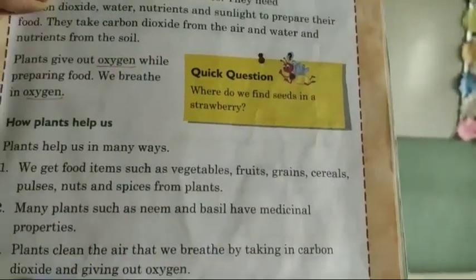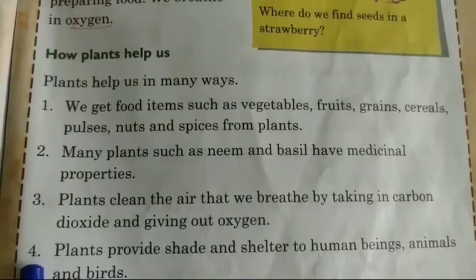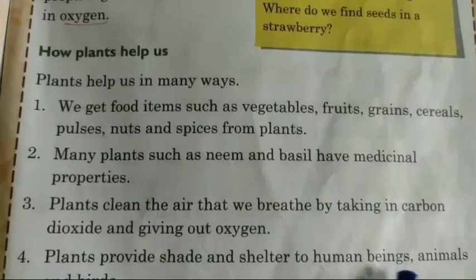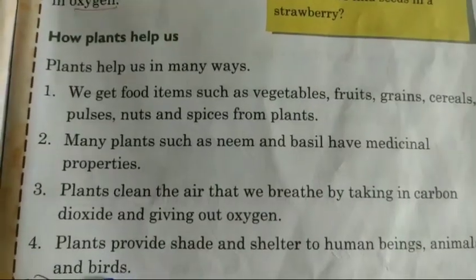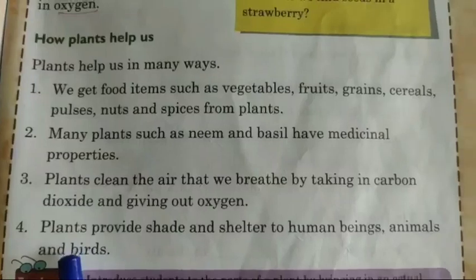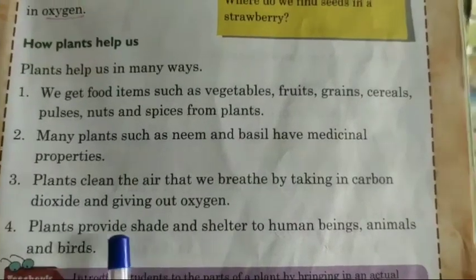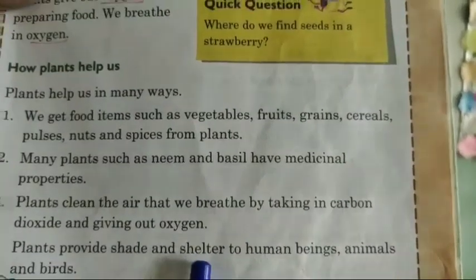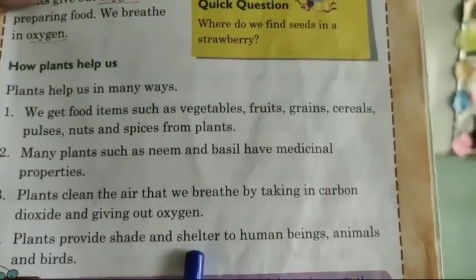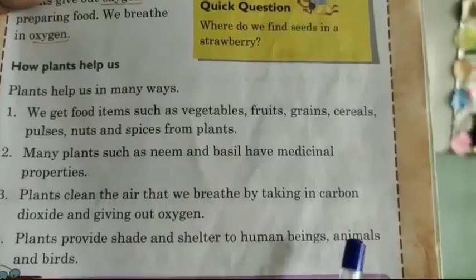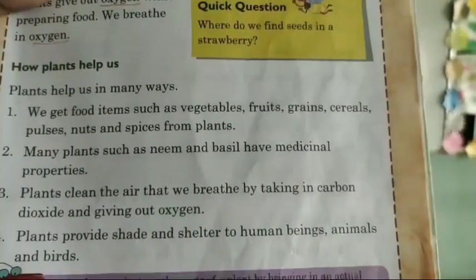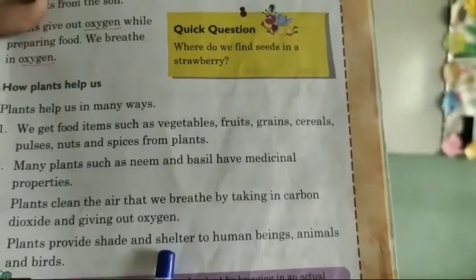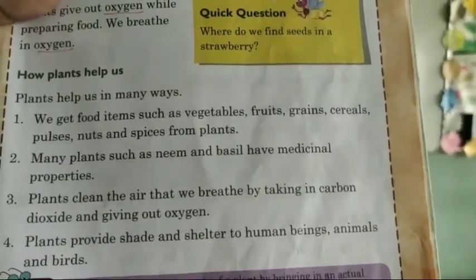Now Point 4: plants provide shade and shelter to human beings, animals, and birds. This is a very true thing. Big plants give shade — shade means shadow or shelter. We human beings, animals, and birds all benefit. What is the house of birds? Trees. So that is a very good thing — shelter.